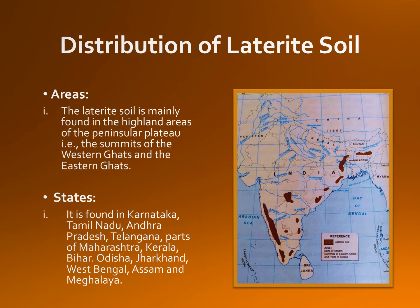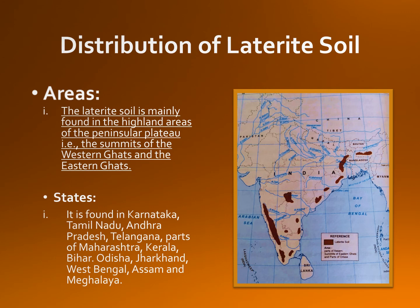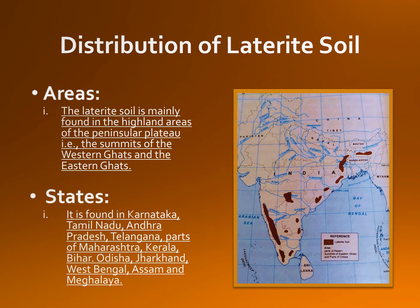Distribution of laterite soil: In India, laterite soil is widespread covering over 10% of the total geographical area. The laterite soil is mainly found in the highland areas of the peninsular plateau — at the summits of the Western Ghats and the Eastern Ghats. It is found in Karnataka, Tamil Nadu, Andhra Pradesh, Telangana, parts of Maharashtra, Kerala, Bihar, Orissa, Jharkhand, West Bengal, Assam and Meghalaya.